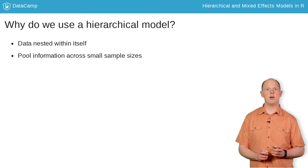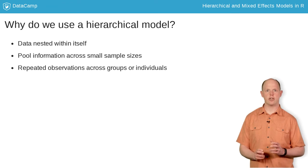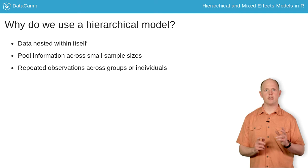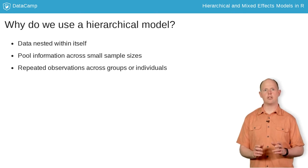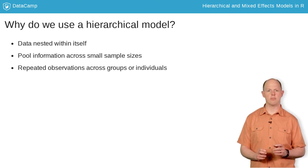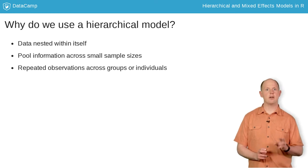Lastly, what if we revisit the same group of students year after year? In this scenario, our observations are not independent across years. A repeated measures analysis, another example of a hierarchical model, allows us to correct for this. We'll revisit this in Chapter 4.